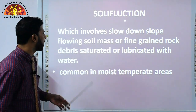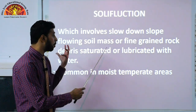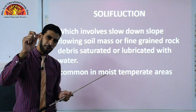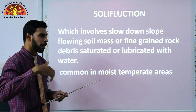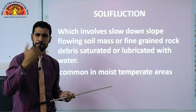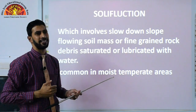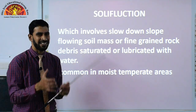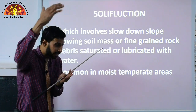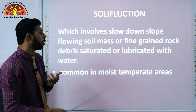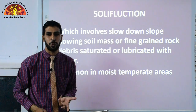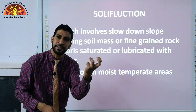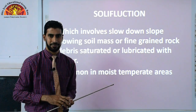Solifluction involves slow downslope flowing of soil, ice, or a mass of fine-grained rock debris. In mountainous areas, small debris collapses and comes down due to weathering and rainfall. When debris is lubricated with water, it flows down together. Solifluction is common in moist temperate areas because when moisture and heat combine, breakdown occurs.